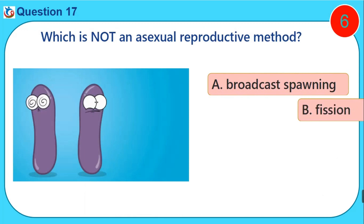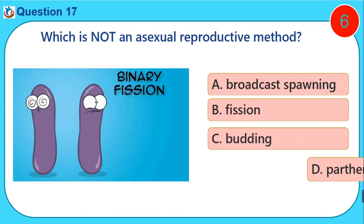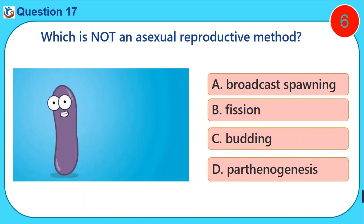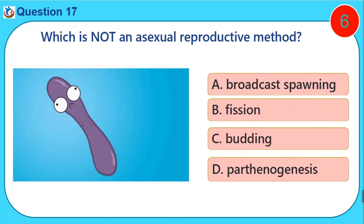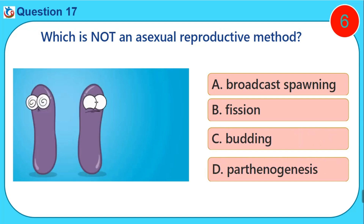Which is not an asexual reproductive method? A. Broadcast spawning. B. Fission. C. Budding. D. Parthenogenesis.